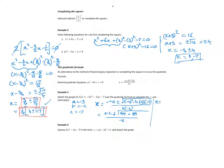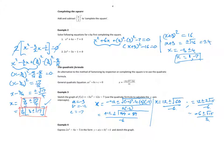So x equals 12 plus or minus the square root of 60, over negative 6. Simplifying: root 60 equals 2 root 15, and dividing everything by 2 gives negative 6 plus or minus root 15, all over 3. Those are my x-intercepts.